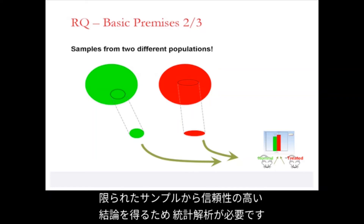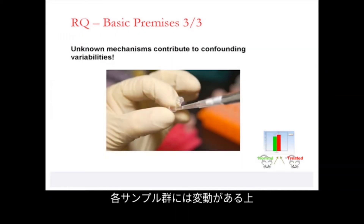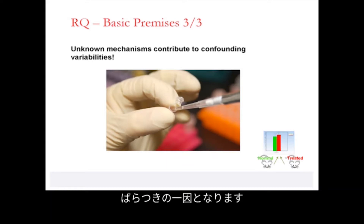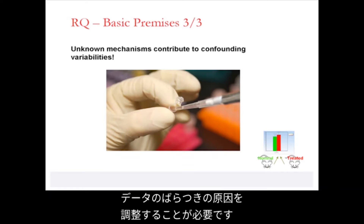Statistical analysis will be necessary to draw reliable conclusions from these limited samples. We have variations within each sample group. In addition, handling and processing often involve unknown mechanisms that contribute to confounding variabilities. Pre-processing and statistical analysis will be necessary to handle these different contributions to data variability.